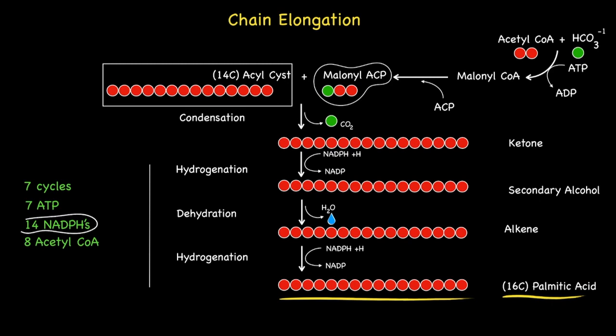Now, some of you may be wondering why we need 14 NADPHs as opposed to just seven. Well, the simple answer is each chain elongation cycle requires an NADPH at step number two and step number four. This gives us a total of two per cycle multiplied by seven, giving 14 in total.